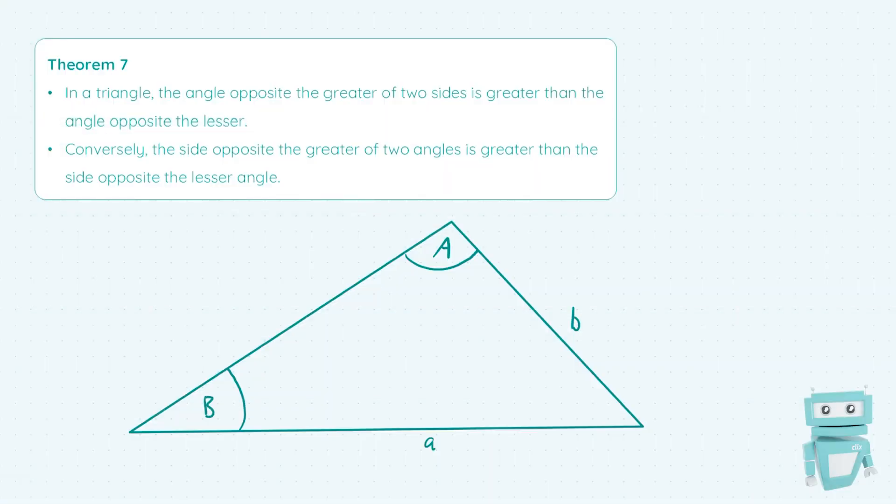So we have a triangle here as you can see with the labeled angles A and B and also the labeled sides a and b but in smaller letters.